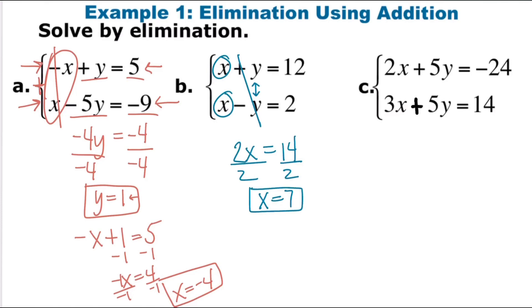Plug into either one of those. So I'll plug into the second one this time. We have x, which is 7, minus our y equals 2. Y equals 5. Again, you should be able to plug in to both of these. You should get 12 and 2.